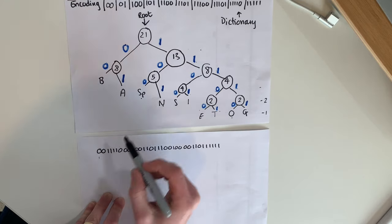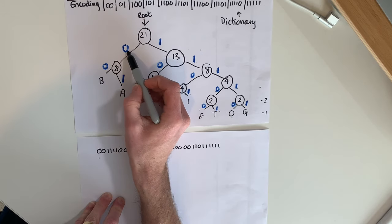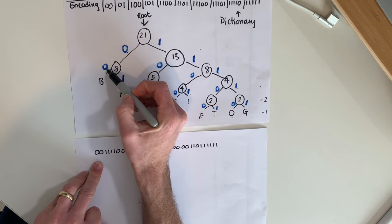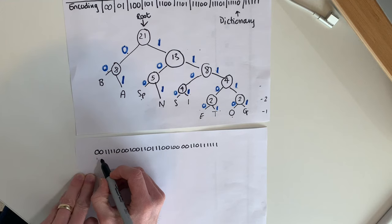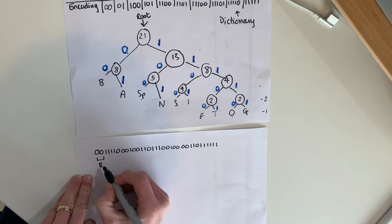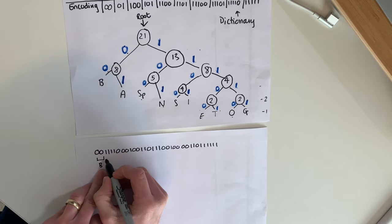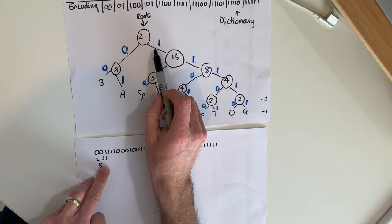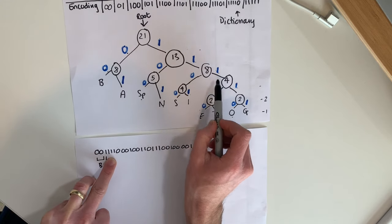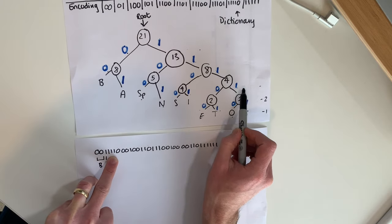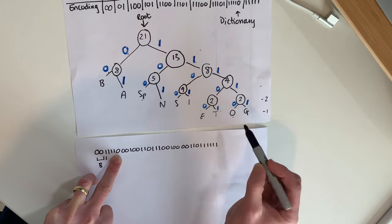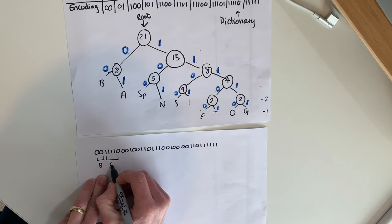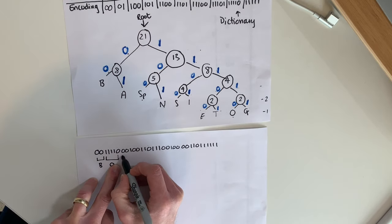All you need to do is start at the beginning of your string, go to your root, and follow the bits through until you hit a character — we call that a leaf. So starting with zero: go to root, go left to zero, not at a character yet; then another zero gets me to a character — zero zero is a B. Next: one, one, one, one, zero — that gets me to a character, which is O. So that's B-O-B decoded.